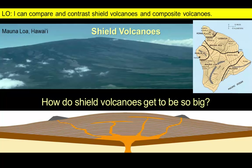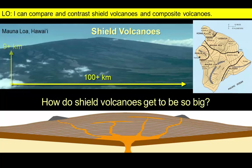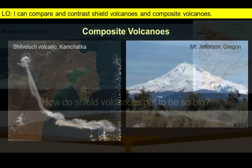The largest shield volcanoes make up the main island of Hawaii. The biggest volcano, Mauna Loa, is more than 100 kilometers across and rises more than 9 kilometers from the floor of the Pacific Ocean, making it taller than Mount Everest. That's one impressive volcano. But keep in mind that many shield volcanoes are much more modest in size.